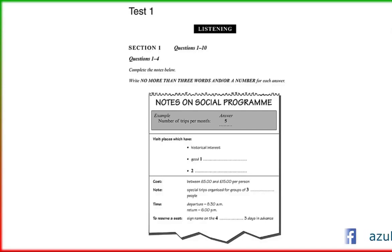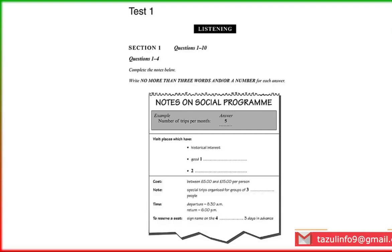You'll hear a number of different recordings and you'll have to answer questions on what you hear. There will be time for you to read the instructions and questions, and you'll have a chance to check your work. All the recordings will be played once only. The test is in four sections. At the end of the test, you'll be given ten minutes to transfer your answers to an answer sheet. Now turn to Section 1.